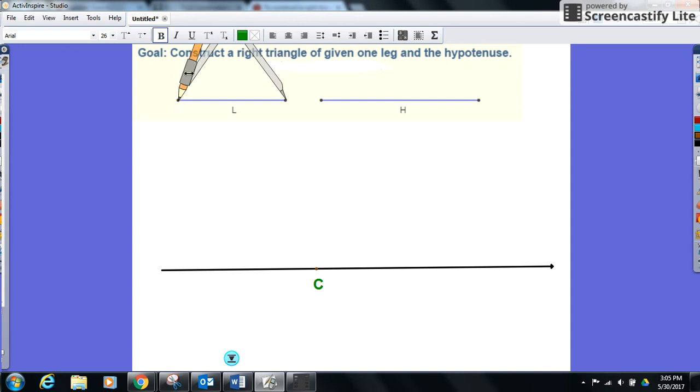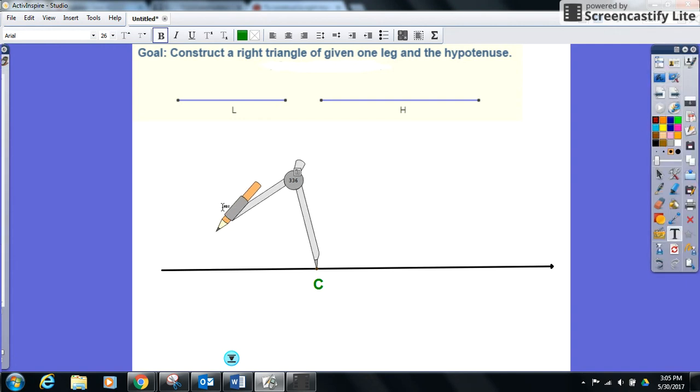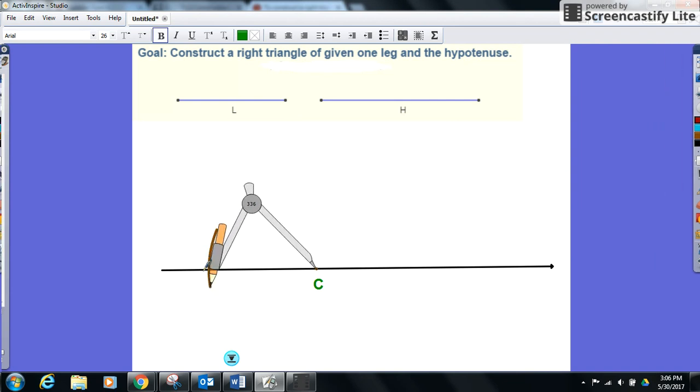And then we will come down to the ray and make two arc marks on both sides of C that have length L. So there's our first arc mark, and then on the other side, our second arc mark.